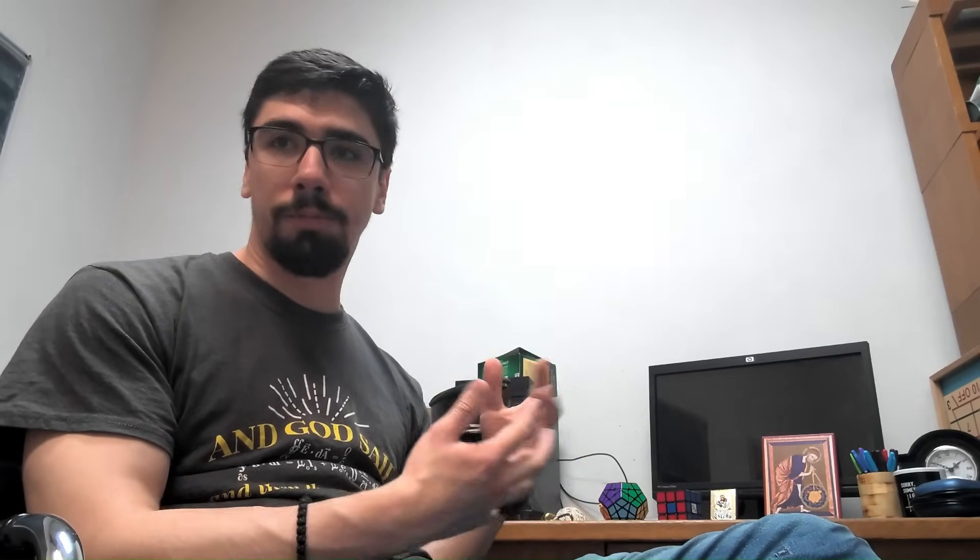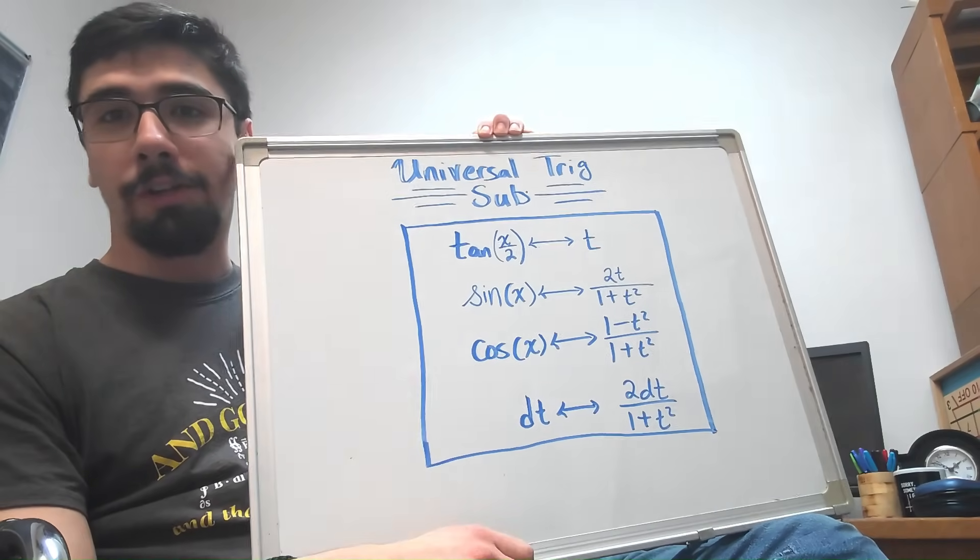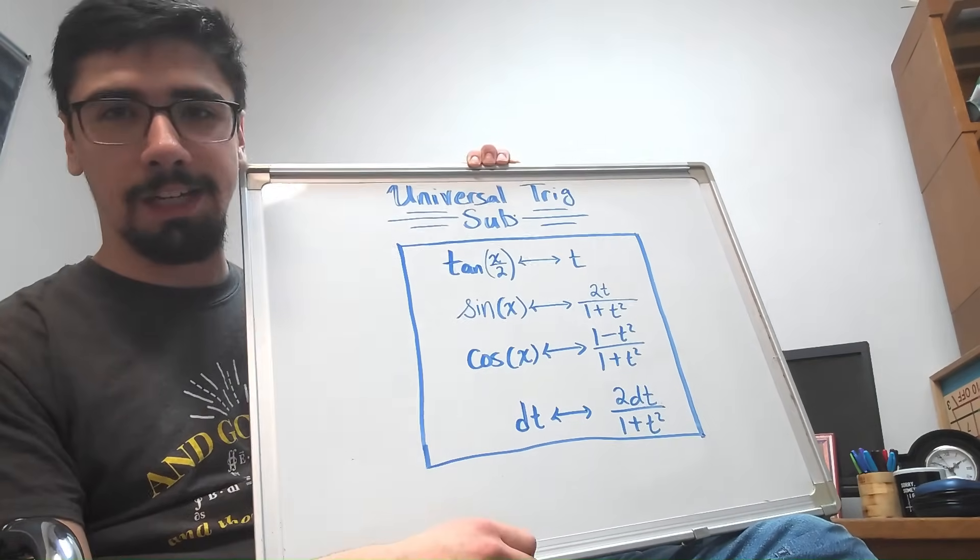The idea is that if you turn it into something involving polynomials instead, then you can use other techniques that, while tedious, are a lot more effective, like partial fraction decomposition. So this substitution goes by the name the universal trig sub. You may also hear it called the Weierstrass substitution, although Weierstrass did not come up with it.